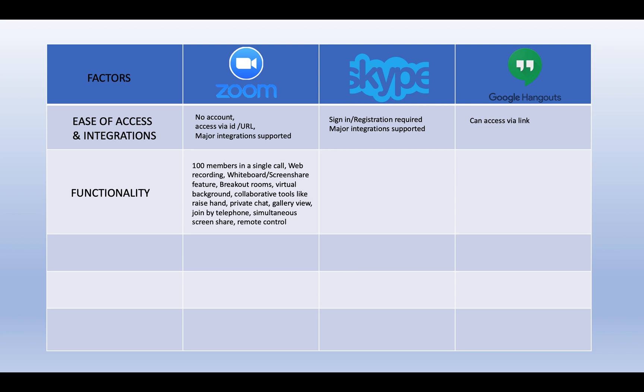As far as Skype is concerned, you can have up to 50 members in a single call. It has separate chat and call functions, plus web recording, whiteboard, and screen share features similar to Zoom. It also has a blur background feature — instead of changing your background, you blur it — which similarly hides your surroundings.